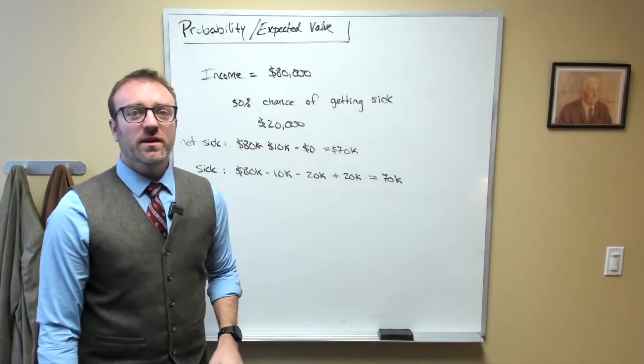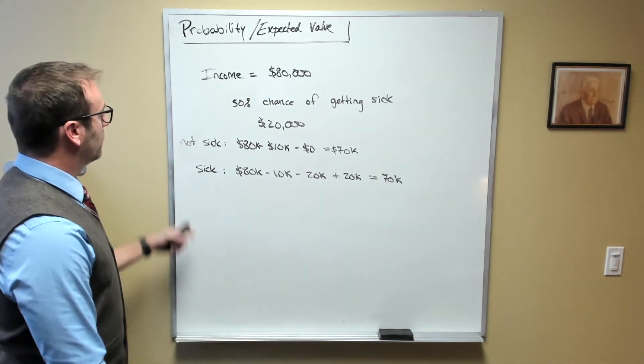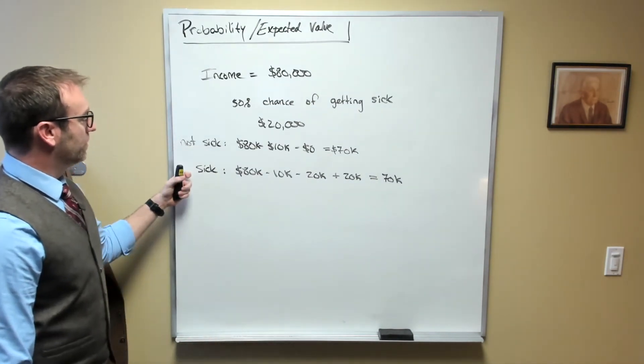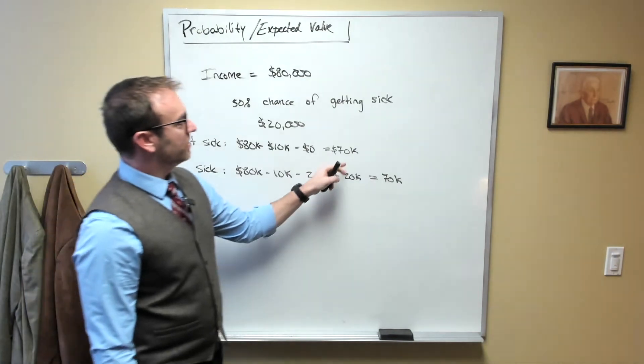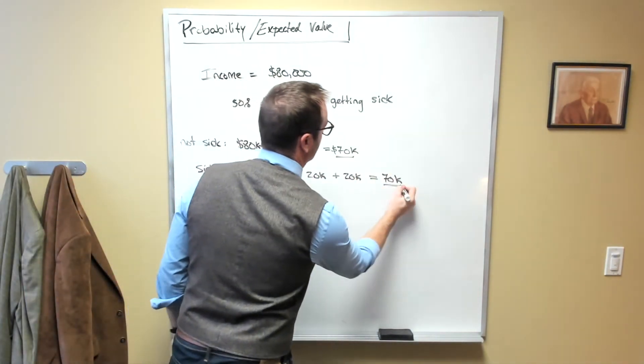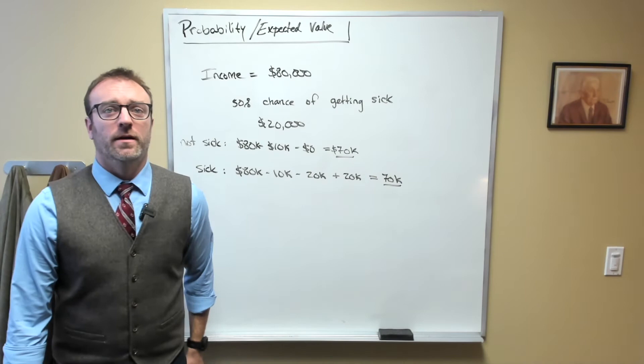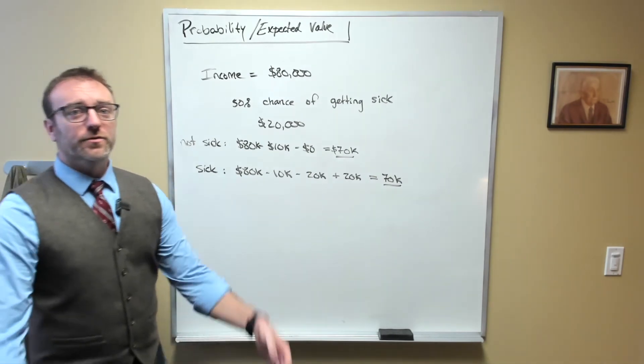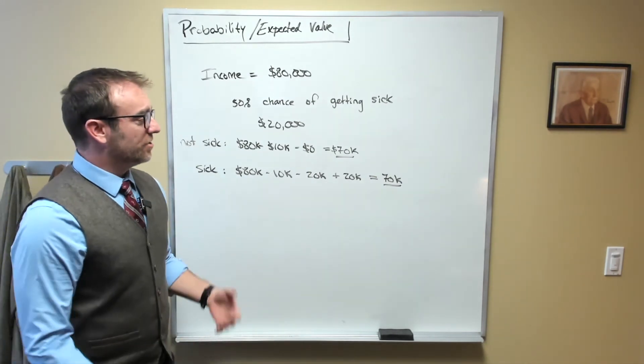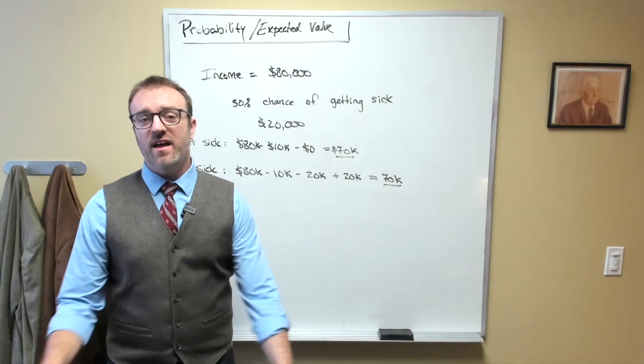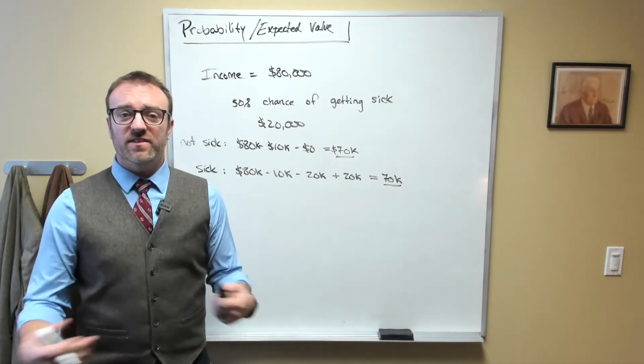Okay, now what this means is that regardless of whether you get sick or not, you are still going to have $70,000 in income every single year. In other words, you have no uncertainty in how many dollars you will have net of all of your expenses at the end of the year.